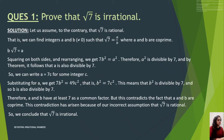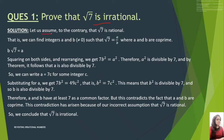Let's do the first question. We have to prove that root 7 is irrational. These types of questions usually come for 3 or 4 marks, but such questions definitely come in the exam. So we have to prove that root 7 is irrational — how will you start?